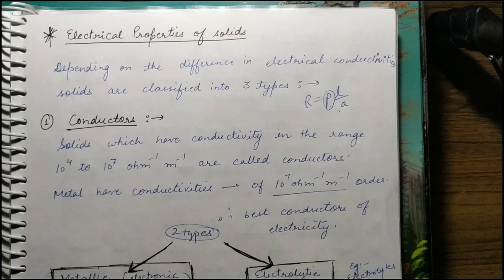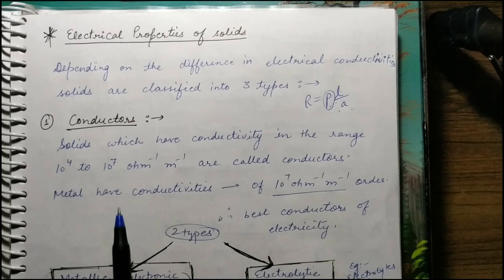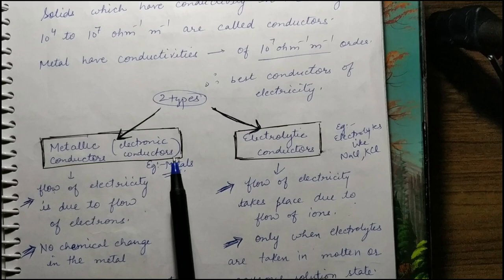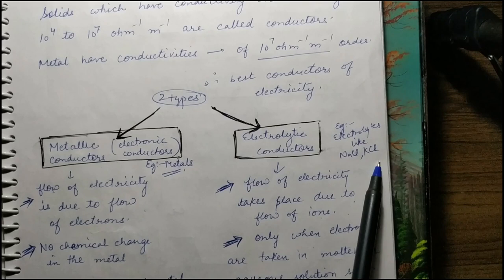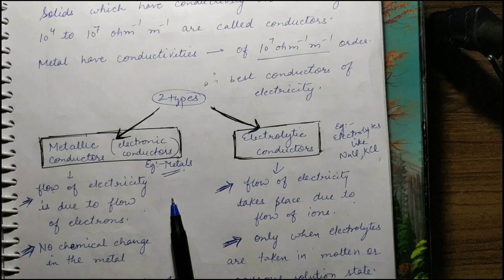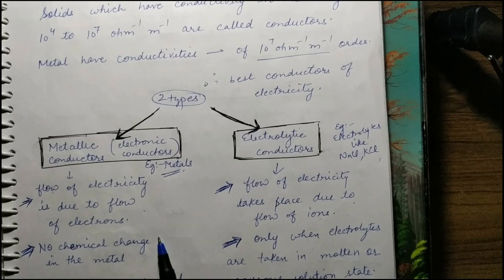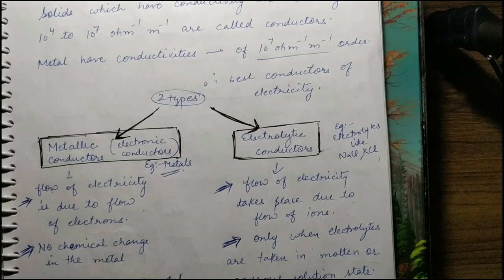We then studied electrical properties. Conductors have a conductivity range of 10⁴ to 10⁷ ohm⁻¹m⁻¹, with two further types: metallic (electronic) conductors where electricity flows due to flow of electrons (conduct in solid and molten state), and electrolytic conductors where ions are present (conduct only in molten and aqueous solution). For conductors, conductivity depends on valence electrons; for electrolytes, on whether ions form. Insulators have very low conductivity: range 10⁻²⁰ to 10⁻¹⁰ ohm⁻¹m⁻¹.